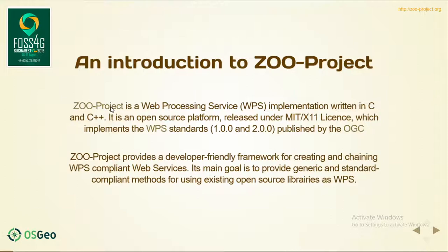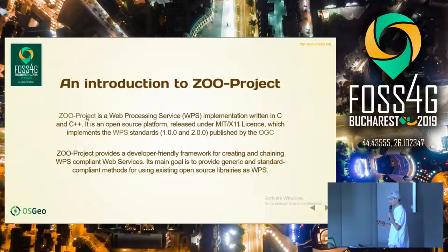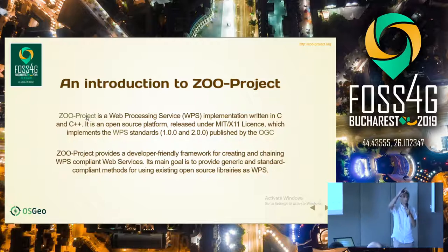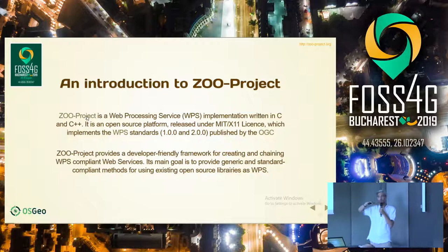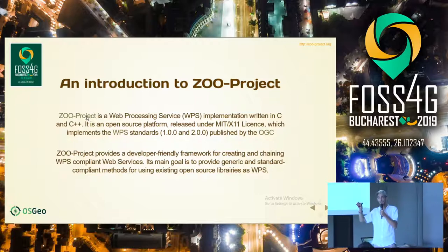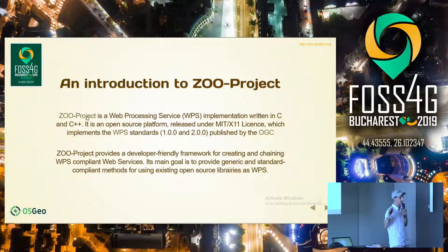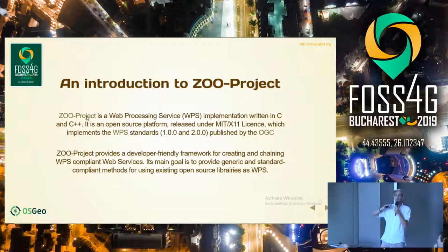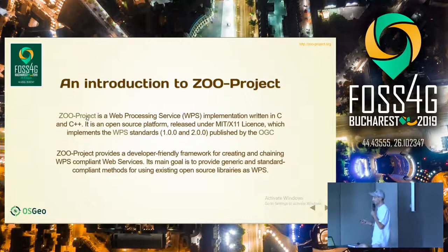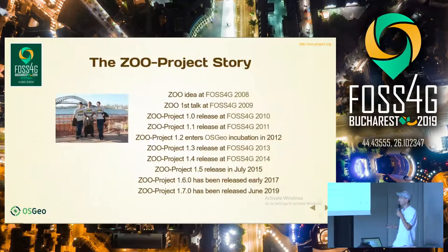The ZOO project is first of all a C and C++ implementation of the WPS standard published by the OGC. It is available on the internet and the initial idea was to create some kind of protocol bus between all the OSGEO libraries and software that are already available, providing a lot of services, and simply find a way to use every tool in a single manner. This is where WPS came into the picture.